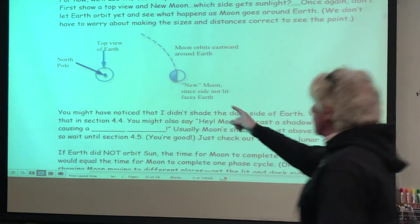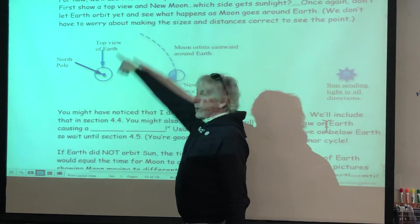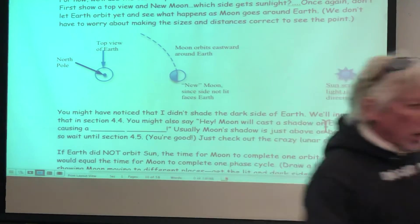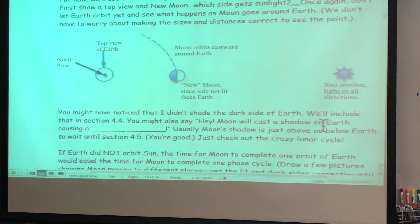So if moon were to orbit, you'd have new to new. One orbit would be one moon phase. Except Sun, or excuse me, Earth is moving.